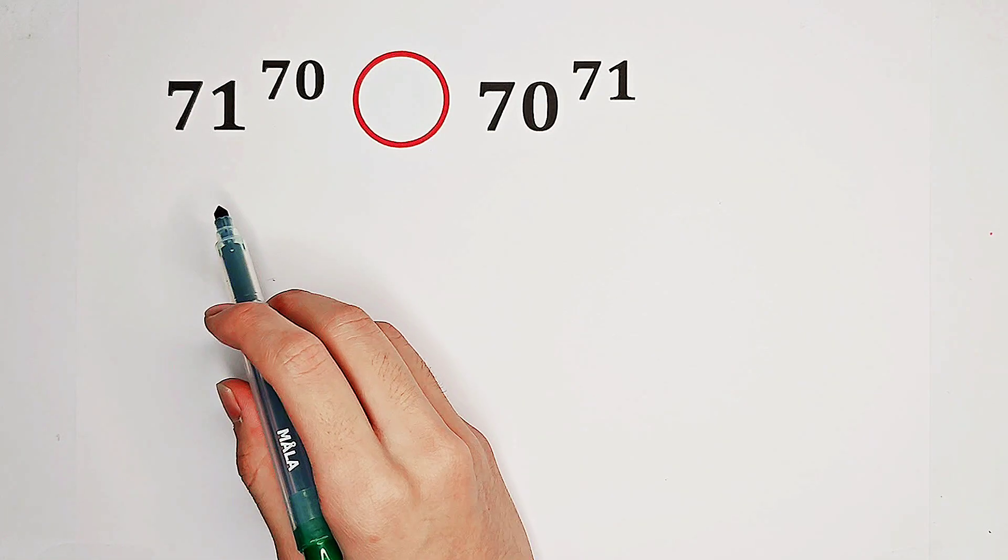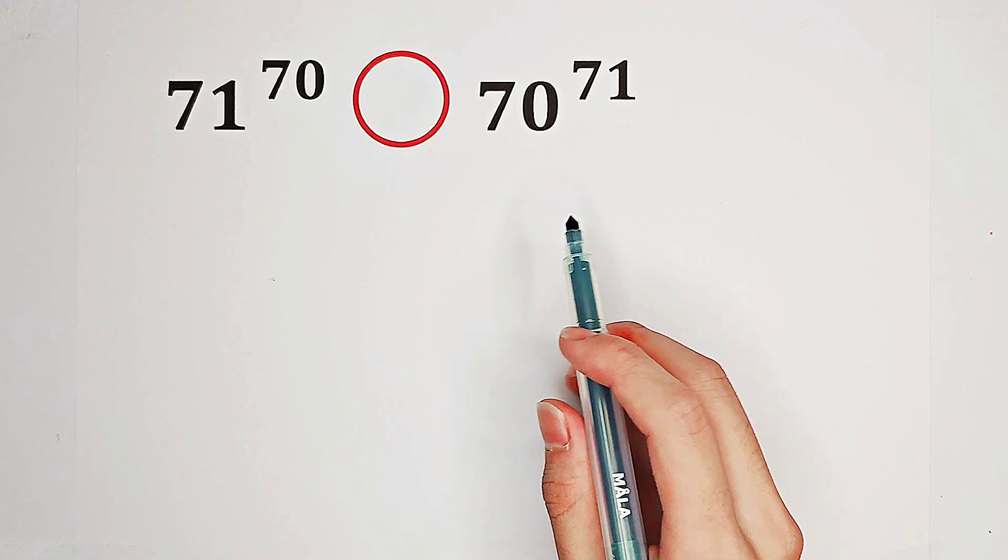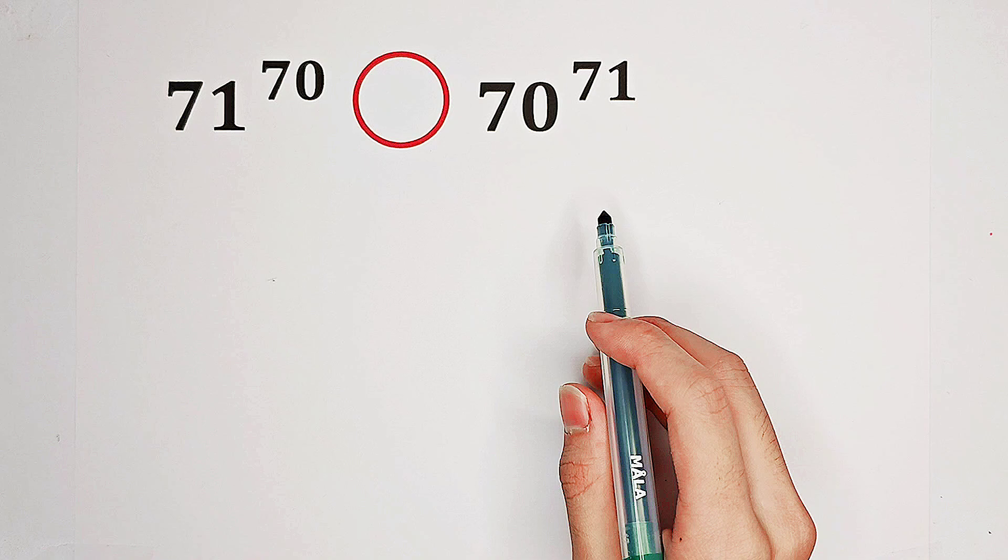Which is greater, 71 to the power of 70 or 70 to the power of 71? What shall we do?